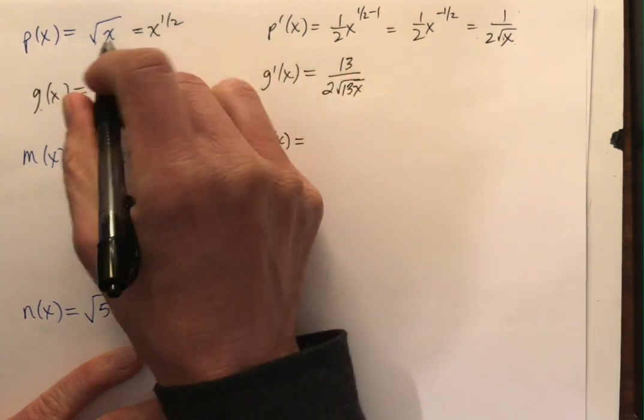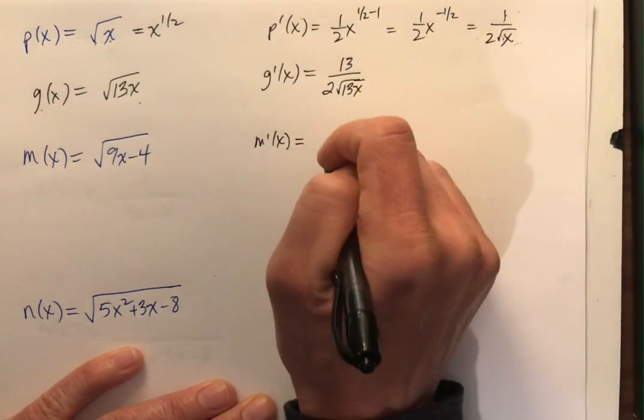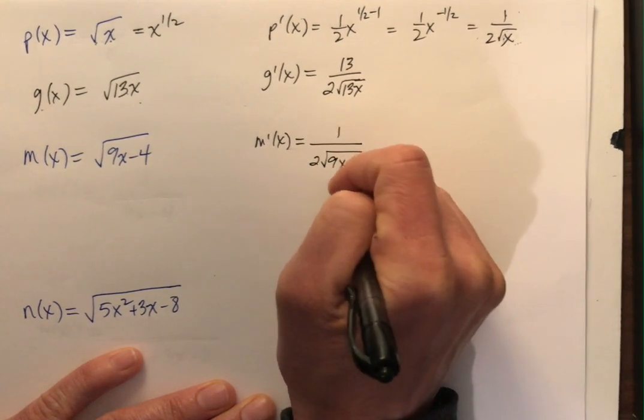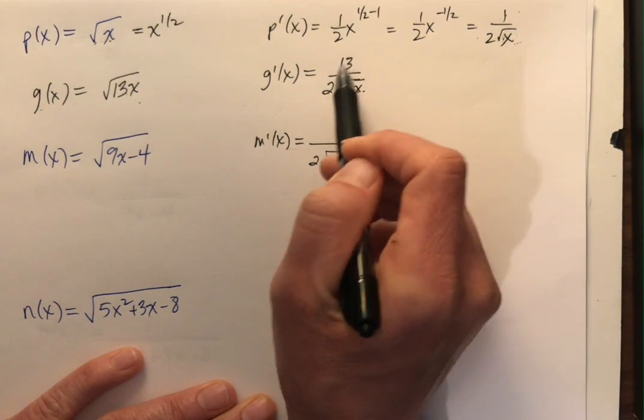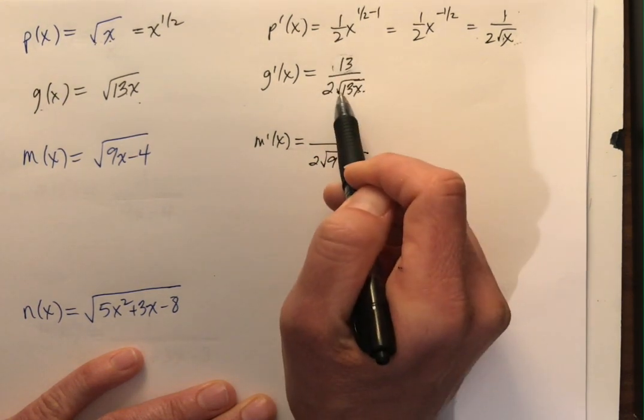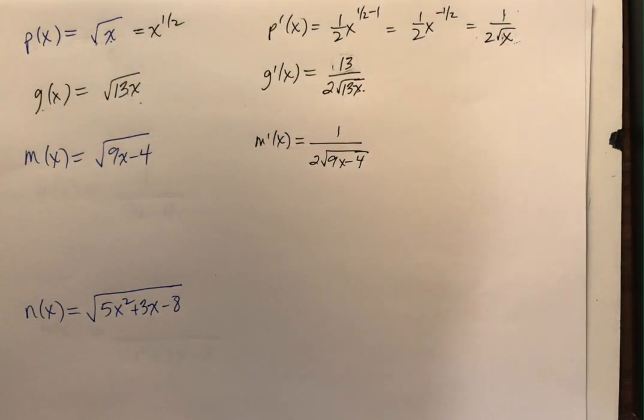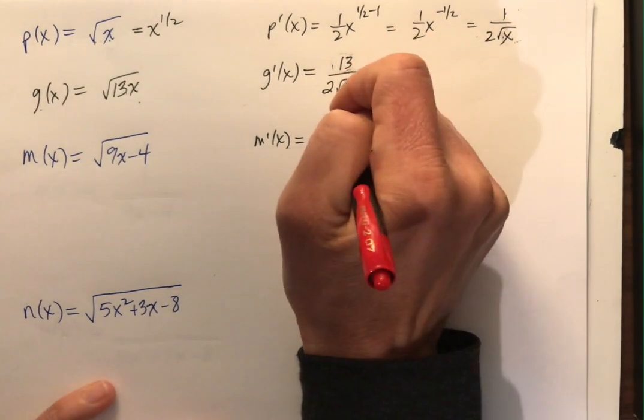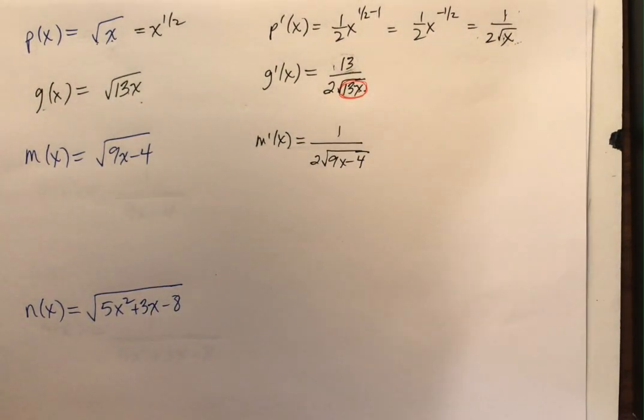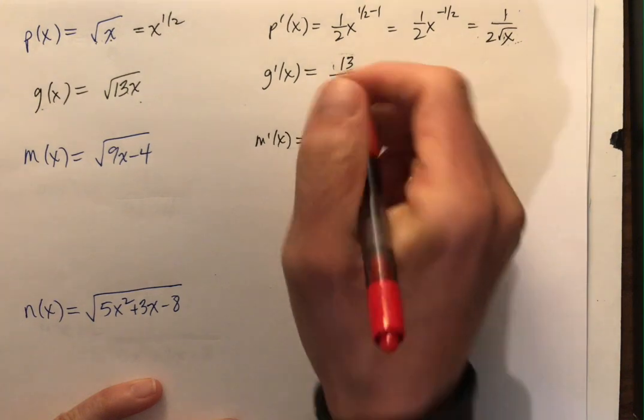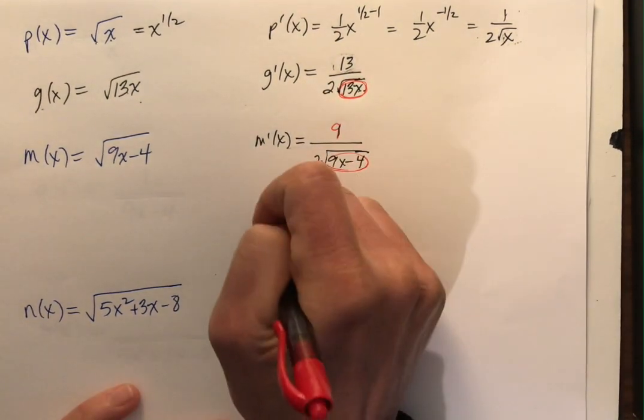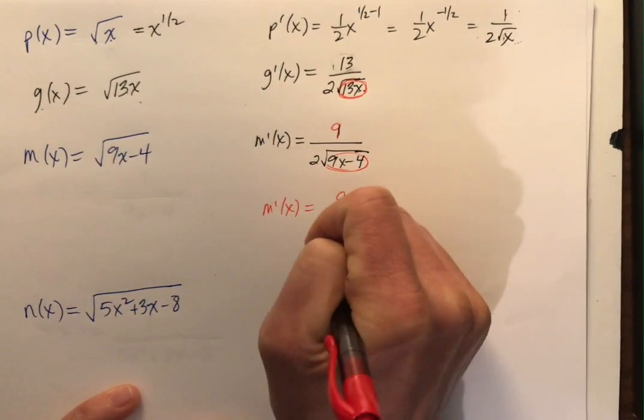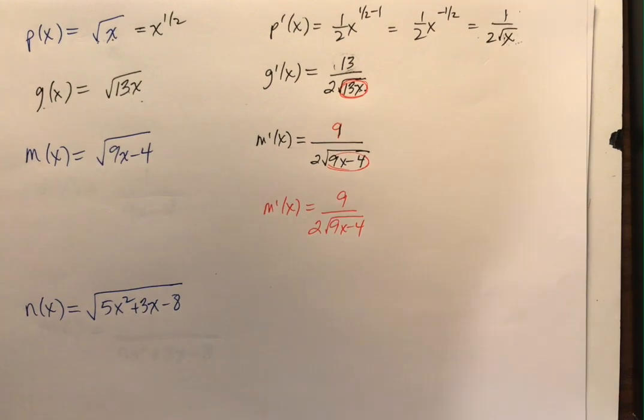Let's think about this one. M prime of x. I'm going to do the square root, it's 1 over 2 times the square root of 9x minus 4. But then there's a 13 there. Where does this 13 come from? It's the derivative of what's underneath the radical. So on my numerator, what's the derivative of what's underneath my radical? 9. So m prime of x is 9 over 2 times the square root of 9x minus 4.